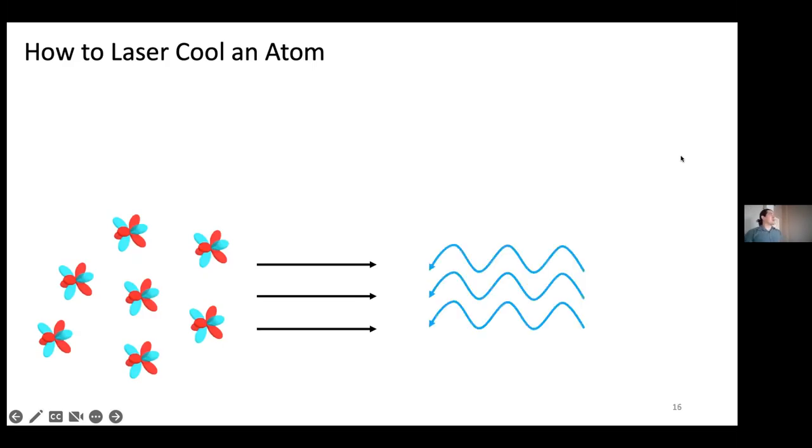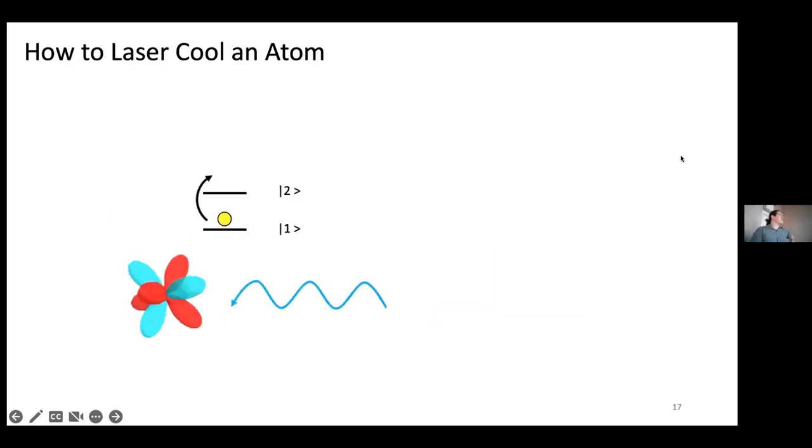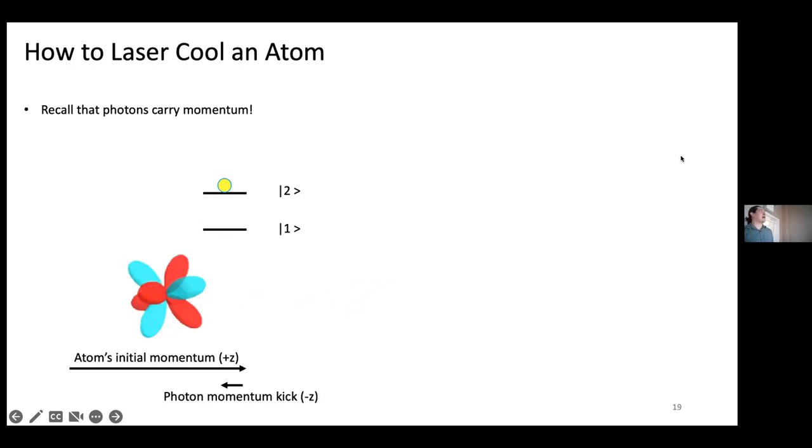Next, you send in a laser that's resonant with an electronic transition in these atoms counter-propagated. So, okay. One of the photons from the laser sees the atom or the atom sees it. I guess there's a philosophical question for you. And excites an electron to a higher energy level. Okay. We're all familiar with that.